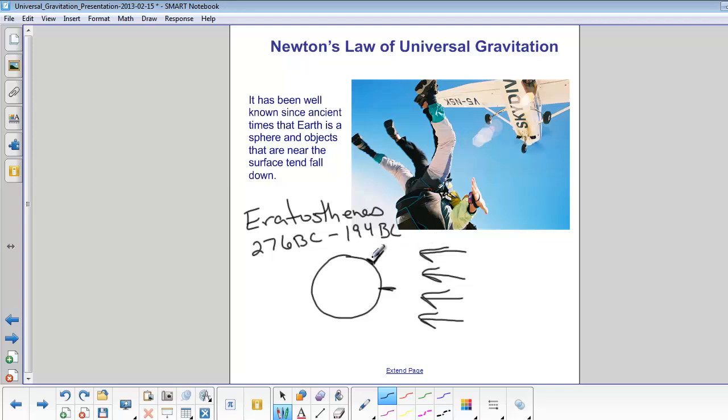Eratosthenes noticed this, and from the angle of the shadow and the distance from one city to the other, he was actually able to calculate the circumference of the Earth.